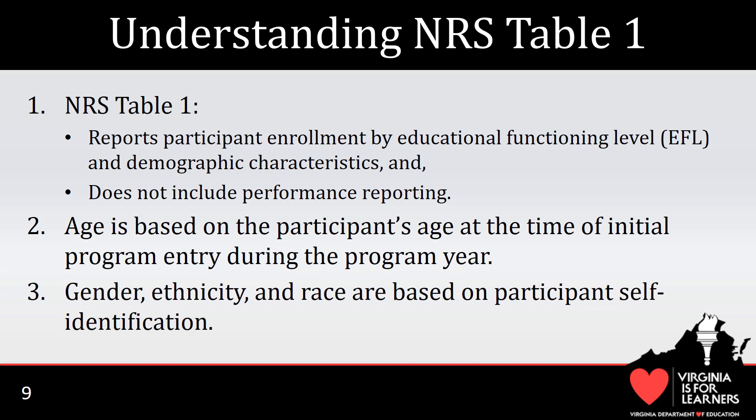Participant placement in EFL is based on the participant's entry EFL for the fiscal year. A participant's EFL at the end of the preceding year becomes his or her entry EFL. If a participant is new to adult education, or was last in an adult education program two fiscal years ago or more, the participant must take a pretest, and the subject with the lowest EFL becomes the participant's entry EFL for NRS Table 1 placement. Totals reported by gender, race, and ethnicity are based on the information reported by the participant at the time of program entry for the fiscal year. If a participant's gender, race, or ethnicity changes during the course of a year, all adult education activity for that participant is reported according to the characteristics identified at the beginning of the year.